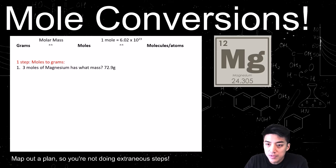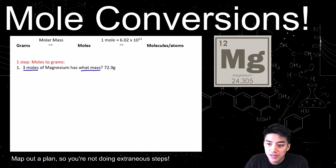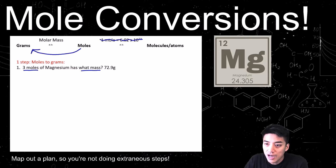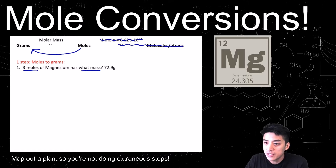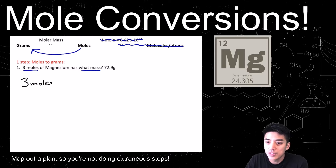As you're doing these problems, make sure you use that chart listed at the top so that you can map out a plan and avoid doing extraneous things. This problem is one step — it's asking you to go from moles to grams. You can see on the chart, you don't need 1 mole equals 6.02×10²³. Students are tempted every time they say mole to use that number, but all you need is just the molar mass.